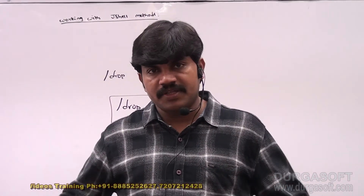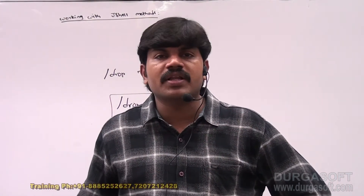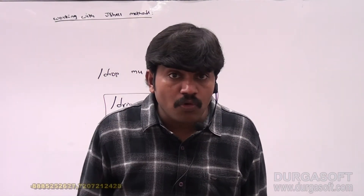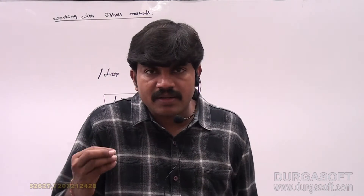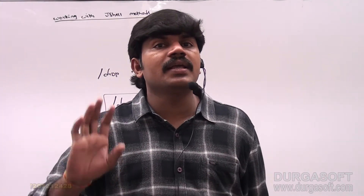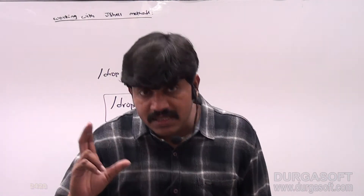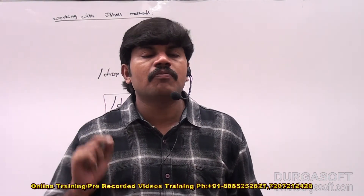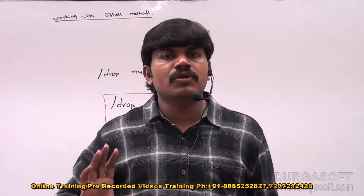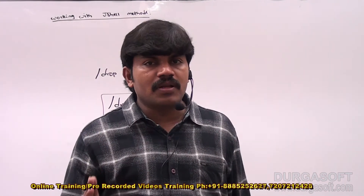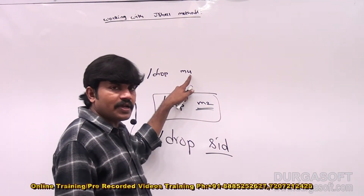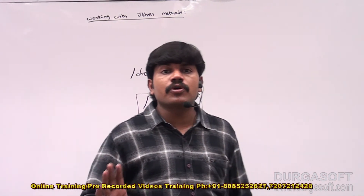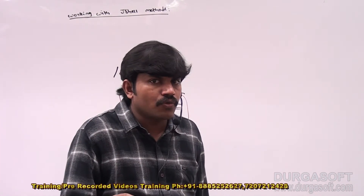So these are the important points related to JShell methods. In JShell you can declare a method and call it any number of times. Complex methods and overloaded methods are possible. Declaring a method with the same signature causes the old method to be replaced with the new method. Inside a method you can use undeclared variables or methods, but to call that method you must first declare those undeclared members. To drop a method use slash drop with the method name; if multiple methods share the same name, drop by snippet ID.